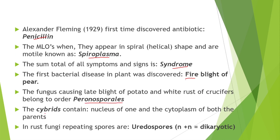The fungus causing late blight of potato and white rust of crucifers belongs to the order Peronosporales. Sybrid cells contain the nucleus of one parent and the cytoplasm of both parents — fusion of one nucleus with two cytoplasmic cells.